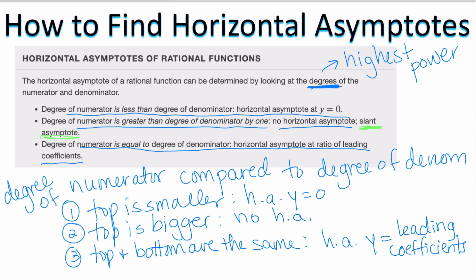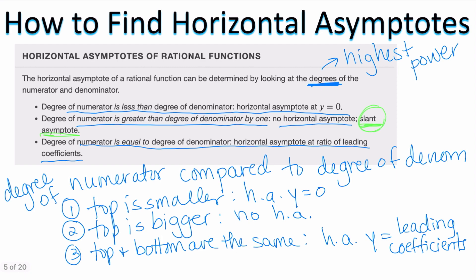Let's talk about slant asymptotes — I'll show this again in its own separate video so as not to confuse you. A slant asymptote only exists when the degree of the numerator is greater than the degree of the denominator by exactly one. For example, if f(x) equals x squared plus one over x minus four, the degree of the numerator is two and the degree of the denominator is one. The top is bigger than the bottom by exactly one, so there is no horizontal asymptote but there is a slant asymptote.